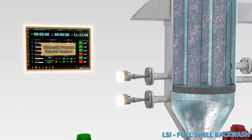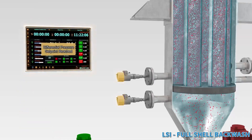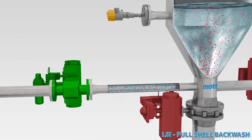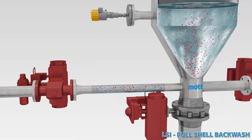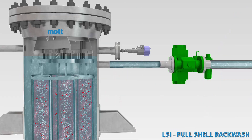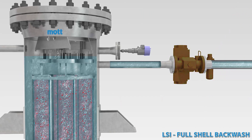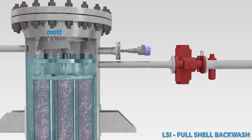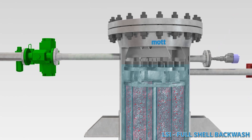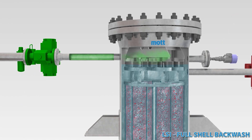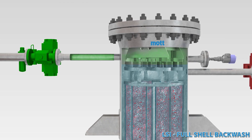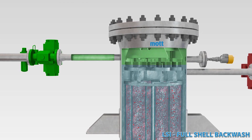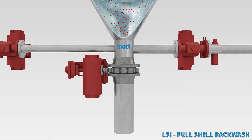When an LSI filter vessel calls for full-shell backwash, a signal is sent to the control system and the vessel is isolated from the process inlet and outlet. Pressurized clean gas is fed into the available gas pocket above the process filtrate. Nitrogen, air, fuel gas, or another available clean gas may be used.